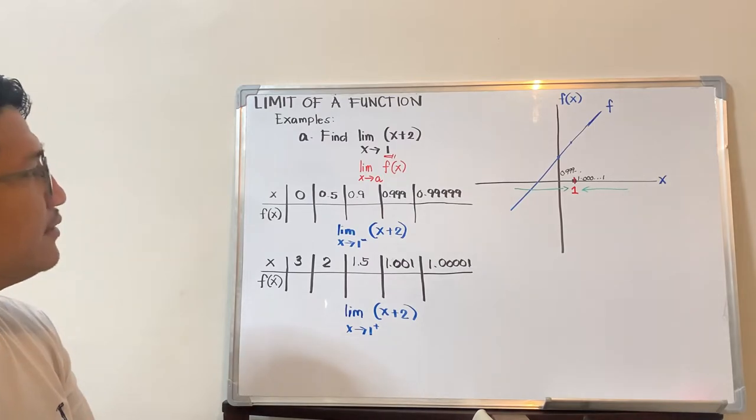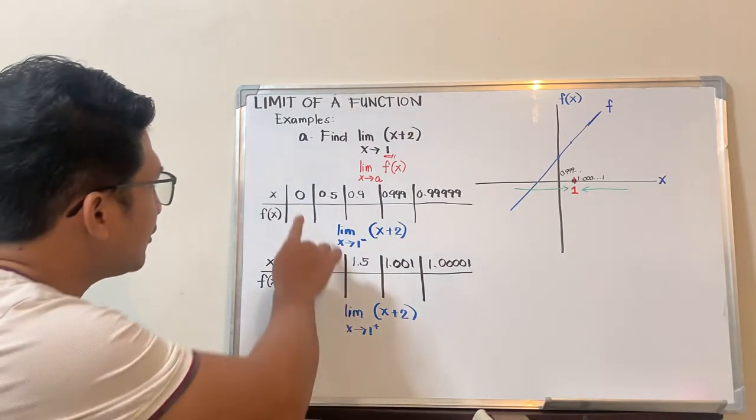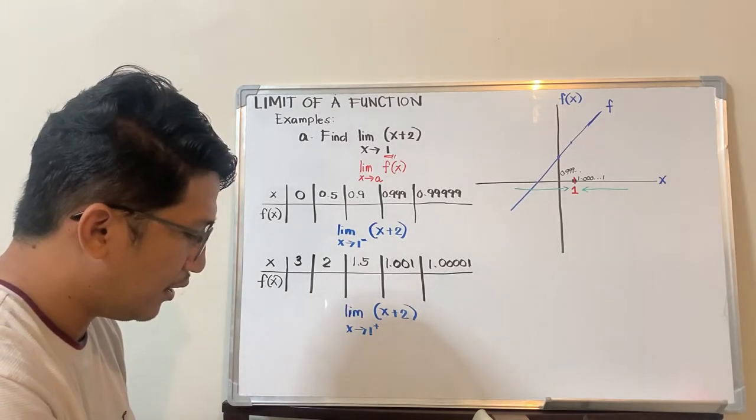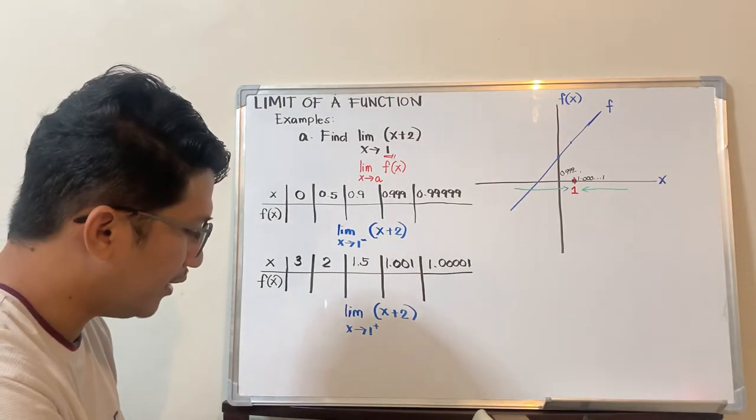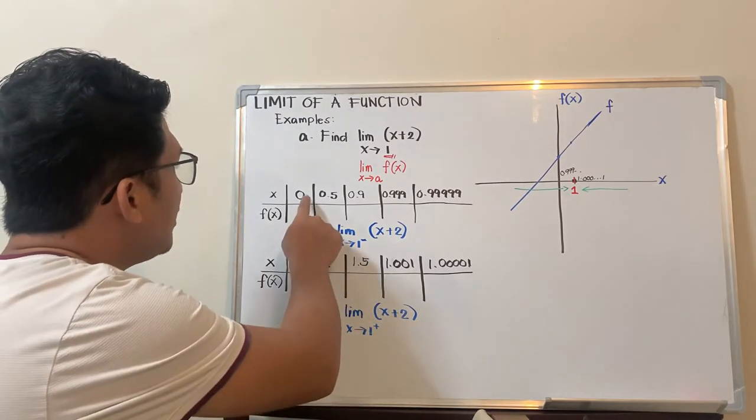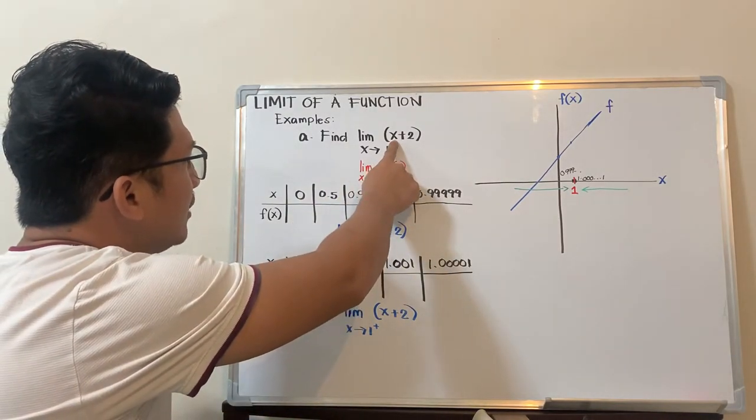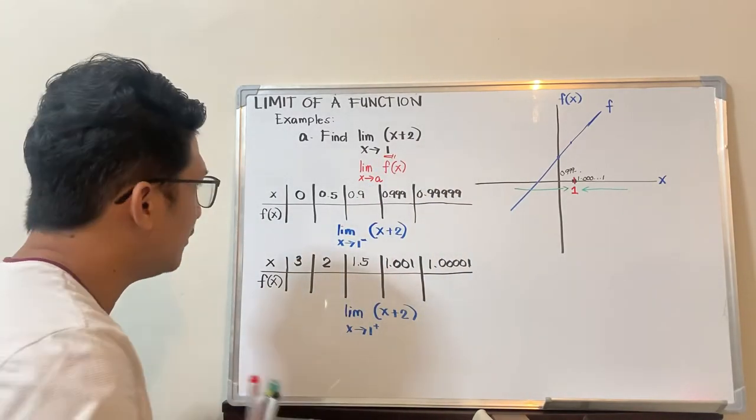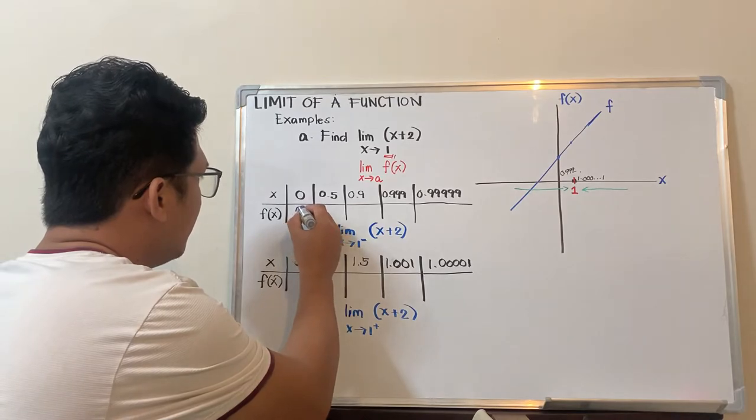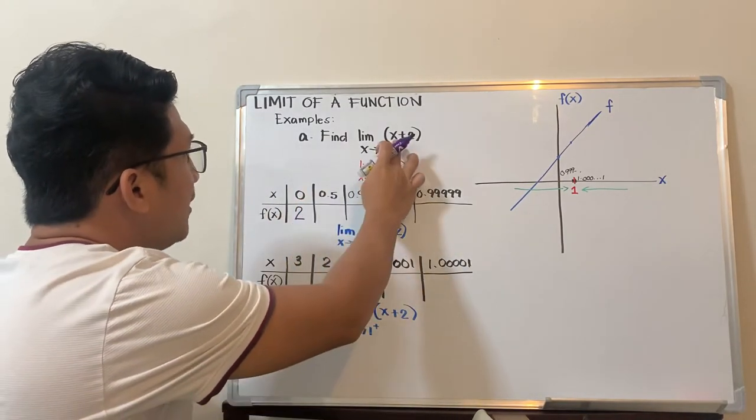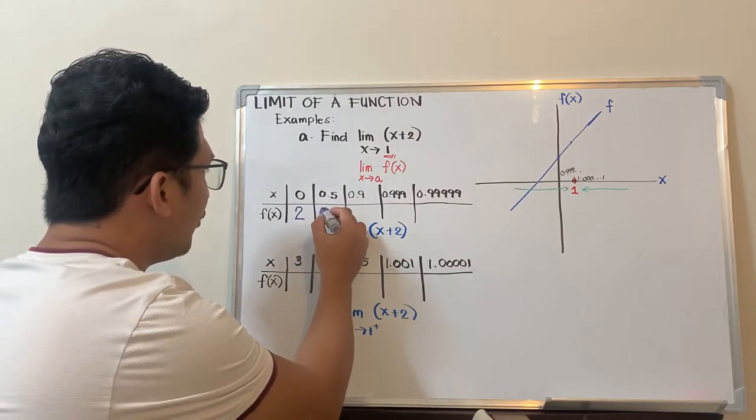Now we substitute. Substitute 0 into x plus 2—that should be 0 plus 2, which equals 2. Next, 0.5 plus 2, that should be 2.5.